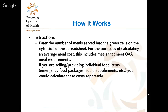Enter the number of meals served into the green cells on the right side of the spreadsheet. For calculating an average meal cost, include only meals that meet Older Americans Act requirements — these should match your SAMS reports. If you are selling or providing individual food items, calculate those costs separately. Emergency meals should not be included in the cost of the nutrition program.